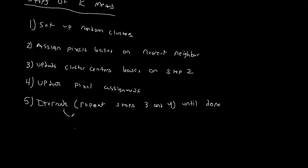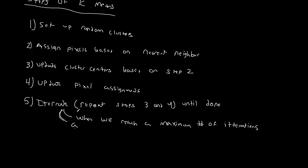How do we know when we're done? We're done when one of two things happens: when we reach a maximum number of iterations — because you can imagine a case where a cluster center is wobbling back and forth — or when a percentage of pixels don't change classes. So either we're clearly going to loop forever, or we've hit a point where things seem stable and we feel comfortable stopping.